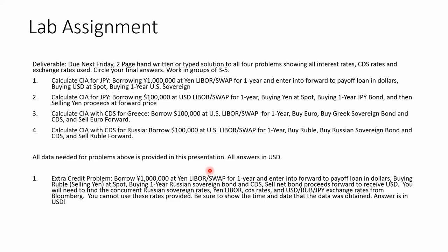Take your yen and buy rubles. To go from yen to ruble, you'll probably need to get the ruble-dollar exchange rate and the yen-dollar exchange rate and do a cross rate, realizing you'll get less than you want — use the low-and-low rates for the cross rate. Then buy a Russian bond and a CDS. You'll need new CDS rates and new Russian sovereign rates. Then sell the net bond proceeds forward to receive U.S. dollars, using the forward ruble-dollar exchange rate to get back to dollars.